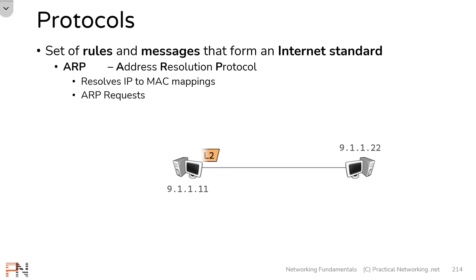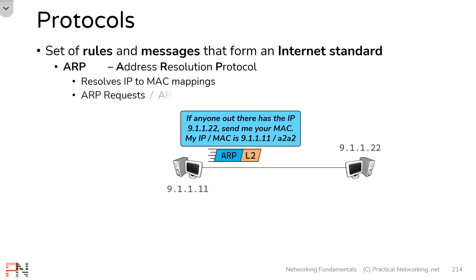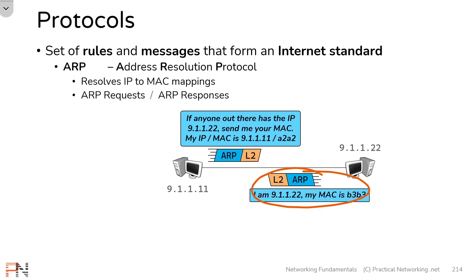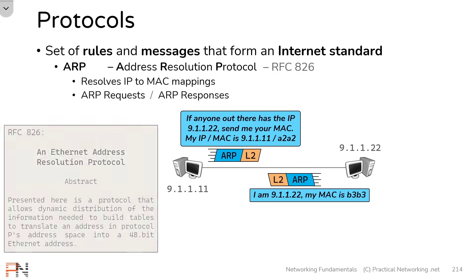This allows two hosts to discover each other's MAC address if all they know is their IP address. They do this by sending out an ARP request, and the receiving host sends an ARP response. The key, though, is someone had to determine what an ARP request looked like — what question was asked, what information was included, or what to add as the destination MAC address. In the same way, something had to decide what an ARP response looked like. In the case of ARP, that set of rules is defined by RFC 826. You can actually look up RFC 826 to see the specific rules for what makes an ARP conversation.